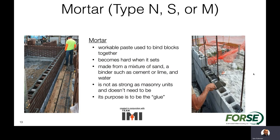Within masonry, we have mortar: type N, S, and M. Mortar is really the other primary element — architects care about color for aesthetics, but from a structural perspective it's also important to have a workable paste that binds the blocks together. It's a cementitious material made of a mixture of sand and a binder element such as cement, lime, and water. The most misunderstood part about mortar is its overall strength and how it's tested. We have to be careful to understand mortar strength versus the assembly strength, because the strength of the mortar is really not a key component in the overall strength of the wall.